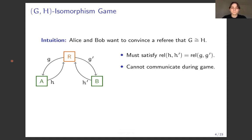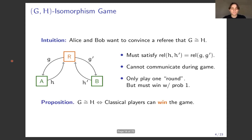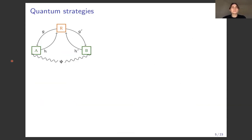An important part of the game is that the players aren't allowed to talk to each other during the game. They can agree on a strategy beforehand and they know the graphs G and H, but once they get their questions from the referee they can no longer communicate. We want them to win with certainty — probability one — no matter what questions they get. You can win this game classically with probability one if and only if the graphs are actually isomorphic.